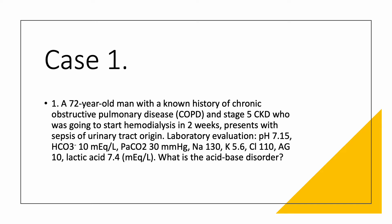Case number one. We have a 72-year-old man with a known history of chronic obstructive pulmonary disease and Stage 5 chronic kidney disease. The patient was going to start dialysis in two weeks. He presents with sepsis of urinary tract origin. Laboratory evaluation revealed pH 7.15, serum bicarbonate of 10, PaCO2 of 30.